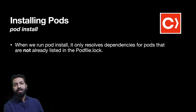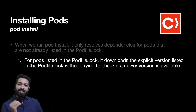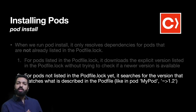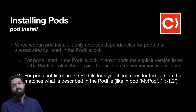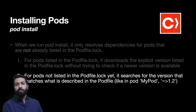When pod install is run, it resolves dependencies only for pods that do not already have entries in Podfile.lock. For pods already listed in Podfile.lock, the exact same version will be downloaded without checking if any newer version is available. For pods not yet listed — being downloaded for the first time — it searches for the version mentioned in the Podfile, and if no version is specified, the latest version is downloaded and its entry is added to Podfile.lock.